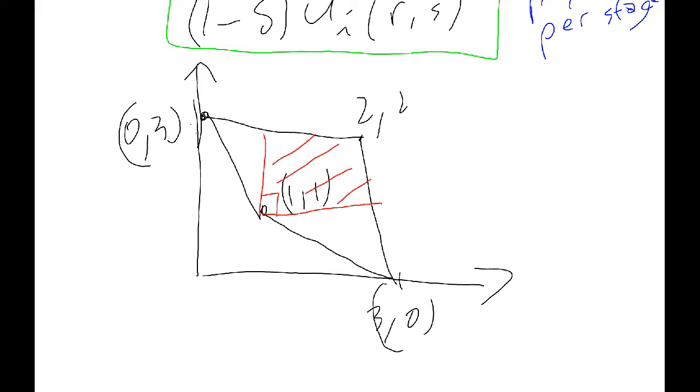This region here where everything is better than the stage Nash, for both players. 1, 1 is the stage Nash in our game, and so we call this region the individually rational payoffs.